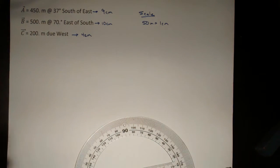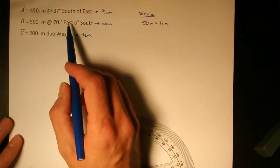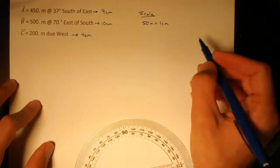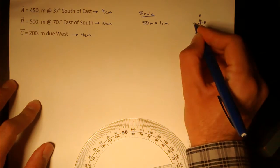The next thing I want to do is figure out where I should start on my page. I see my vectors go south of east and east of south. So if I make north to the top of my paper and east to the right of my paper,